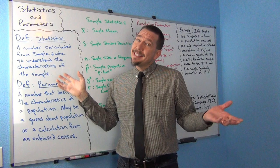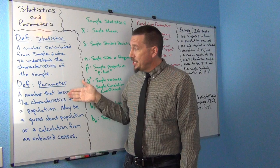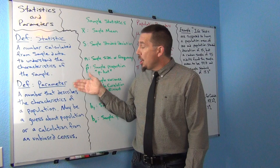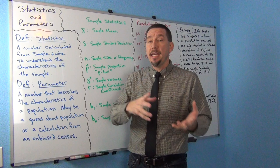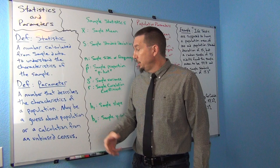But that's not really what we're after. We're after what's going on in the population. So we call that a parameter. A parameter is a number that describes the characteristics of a population — like a population percentage, a population mean, or a population standard deviation.